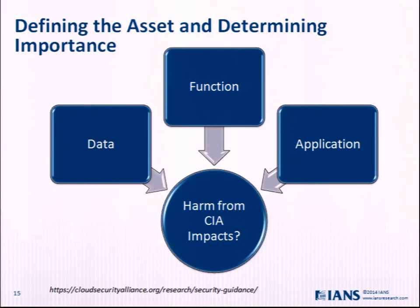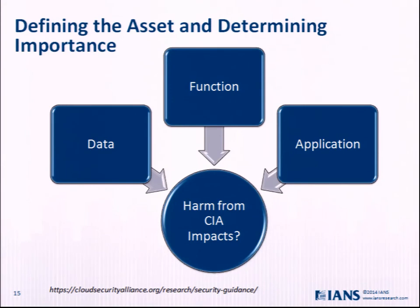Confidentiality, integrity, and availability. What if you lose the confidentiality or the integrity? This may seem like something we know, but I have never gone into a large organization where they've actually sat down and done this and defined it. This isn't something you can just say you get intuitively back of envelope. I guarantee you're forgetting some of the data that's going up there, you don't understand all the functions you're interacting with, and you may not have assessed the real impact from the CIA harm when you put something out into the cloud.